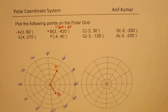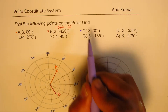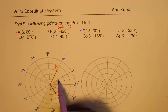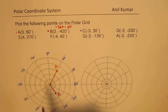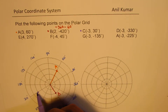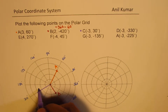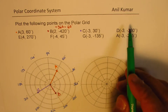Now let's see how to plot C, which has a negative r value: (-3, 30°). 30 degrees is right there, but when r is negative 3, you point in the opposite direction — so you don't go this side, but instead go 1, 2, 3 units on the other side, and that becomes point C.